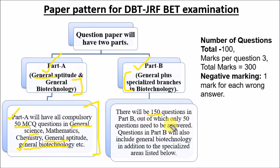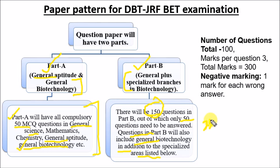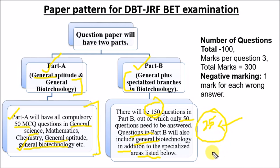For Part B there are 150 questions, out of which you have to attempt only 50. Part B includes a general biotechnology section and a specialized section. Out of 150 questions, generally 25 to 30 questions come from general biotechnology sections like cell biology, immunology, and RDT.